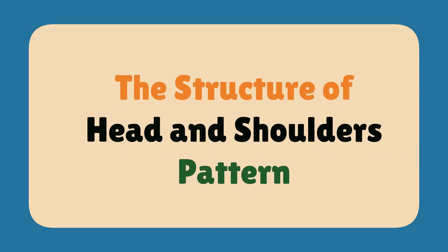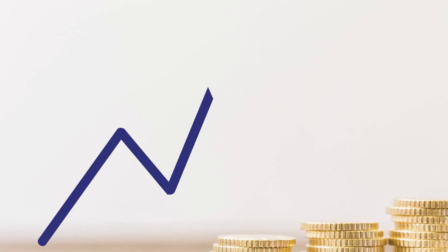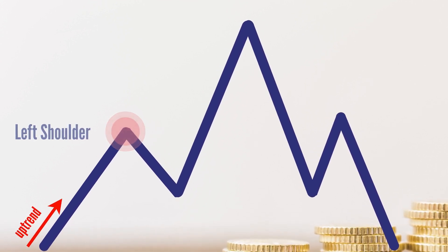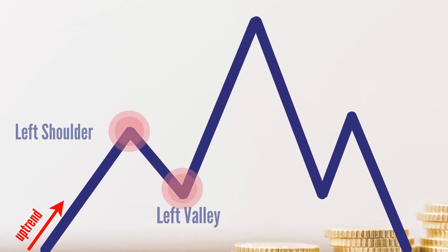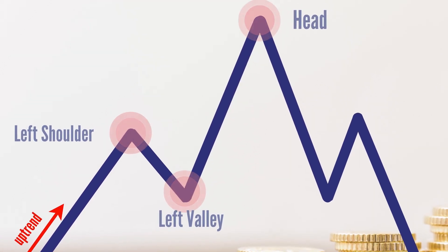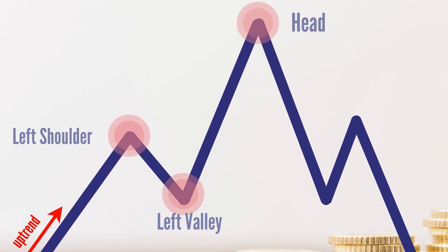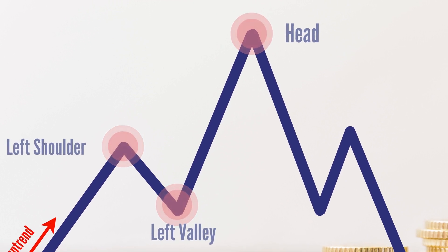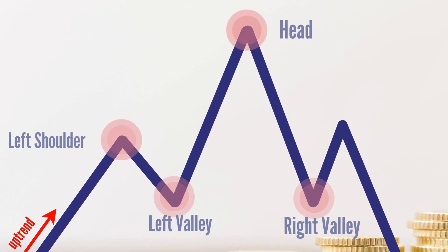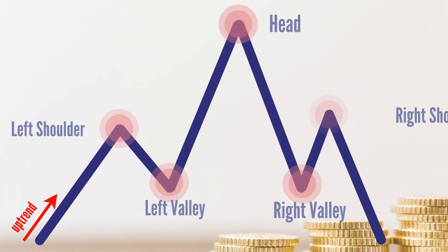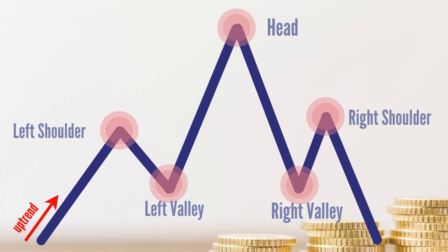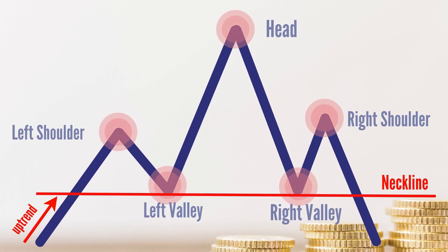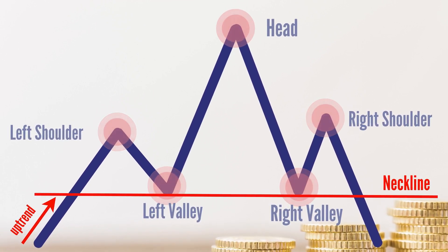The structure of the Head and Shoulders pattern: the left shoulder is the highest peak of the current uptrend. The left valley lies between the left shoulder and the head. The head is a new top formed by another uptrend, also known as the highest peak of the three. The right valley is shorter than the left shoulder. The right shoulder is shorter than the head but higher than the left valley. The neckline is the line connecting the left valley and the right one.